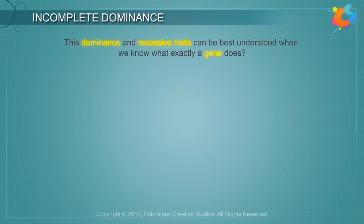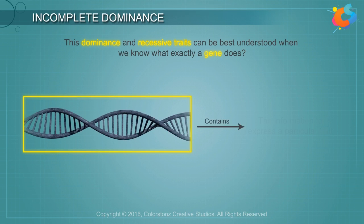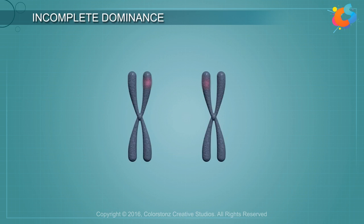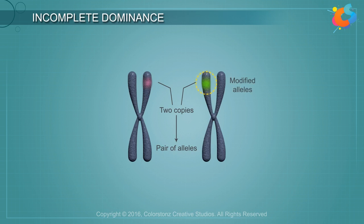Dominance and recessive traits can be best understood when we know what exactly a gene does. Every gene contains the information to express a particular trait. In a diploid organism, there are two copies of each gene — as a pair of alleles. These two alleles may not be similar, as in heterozygotes; one allele may have undergone changes that modify the information it contains.